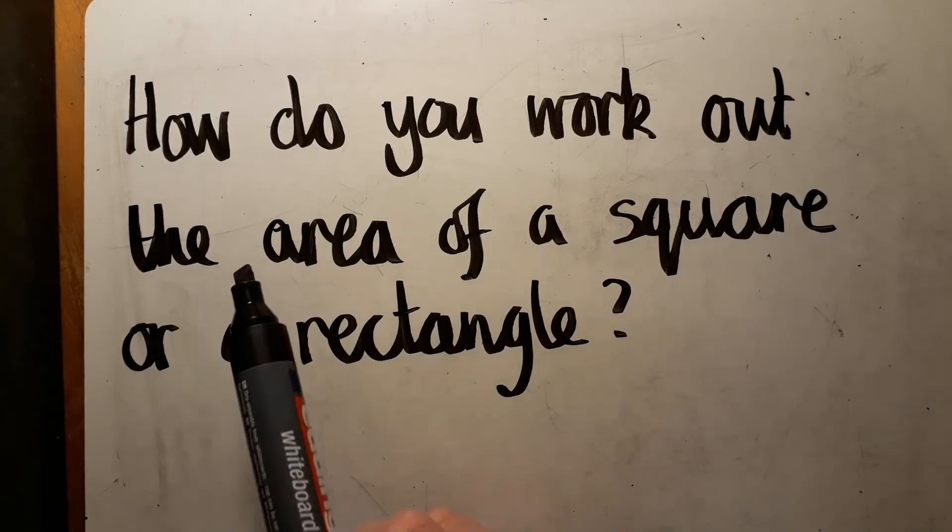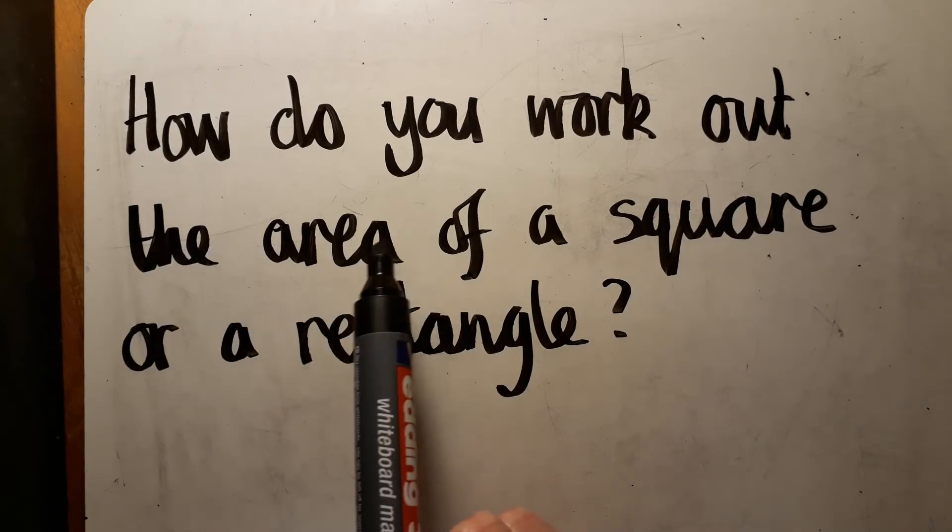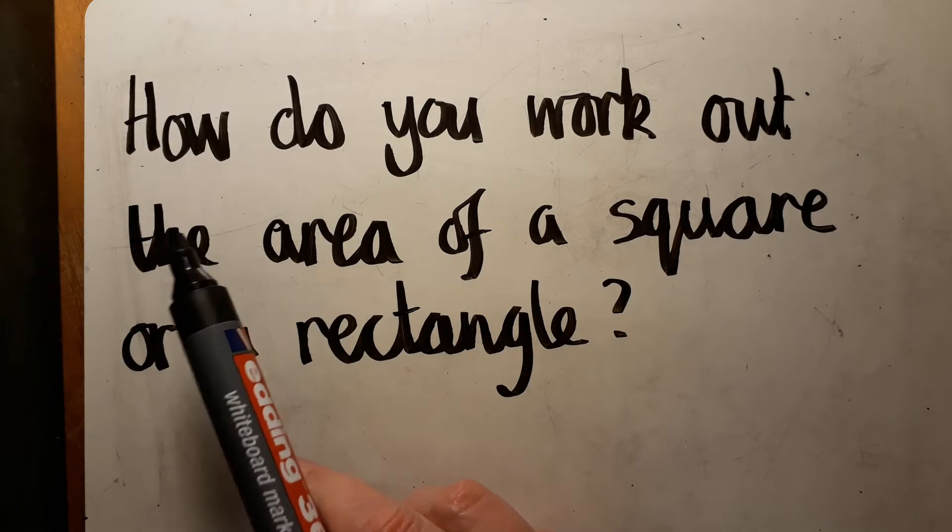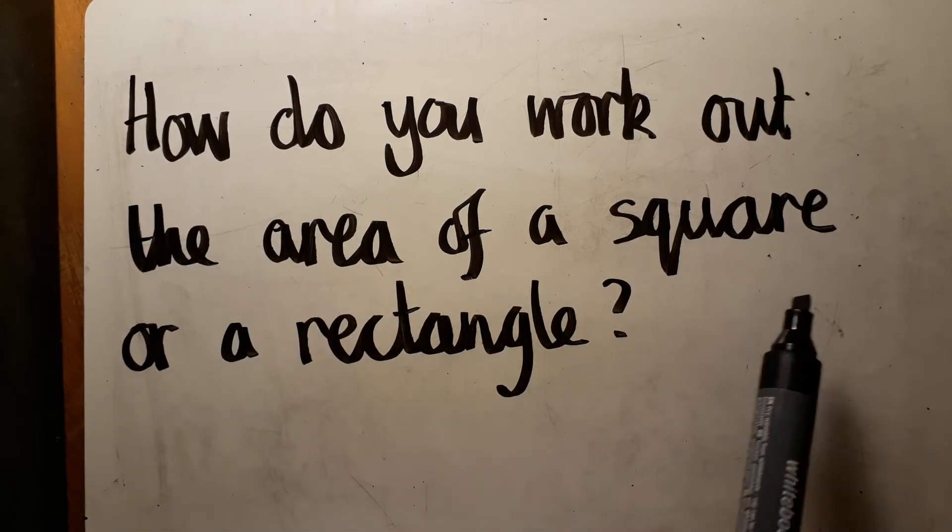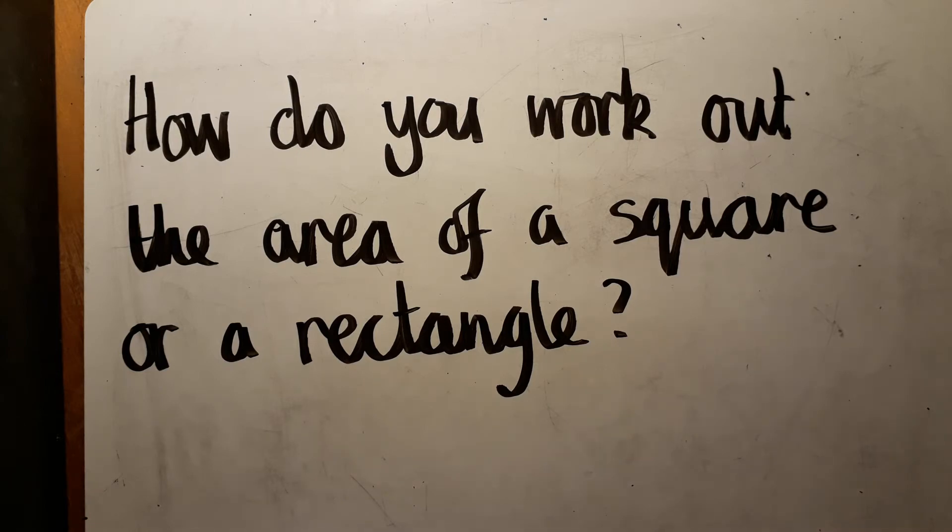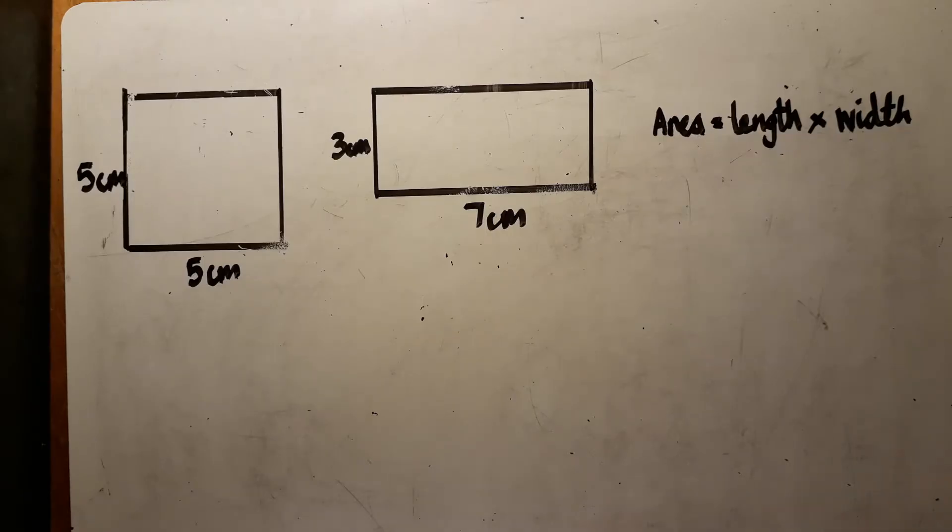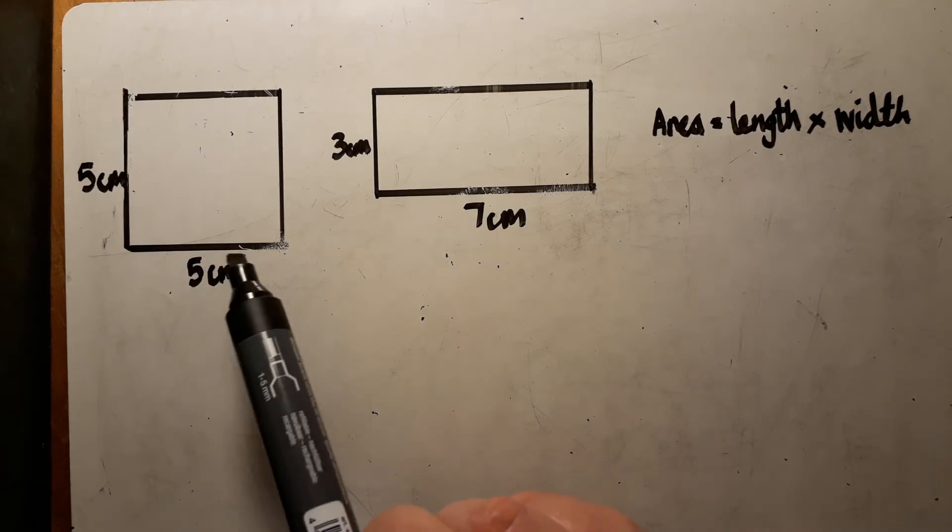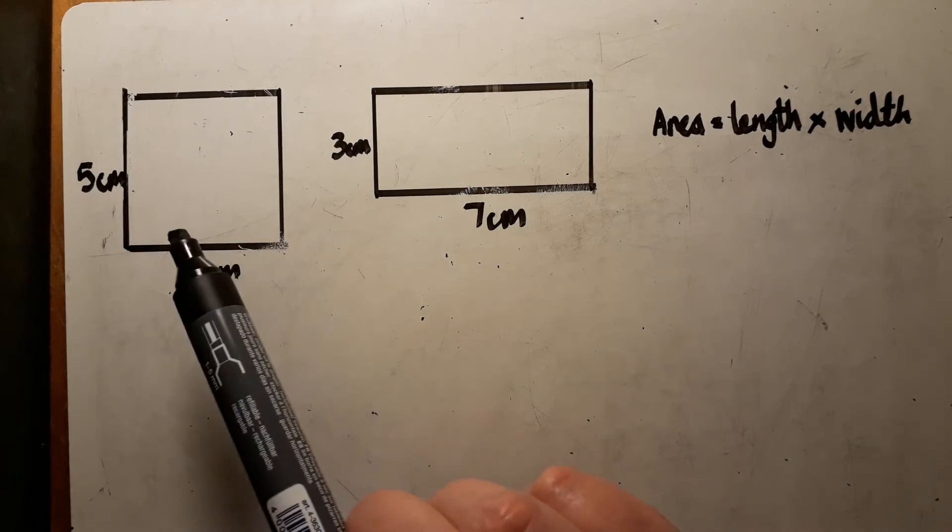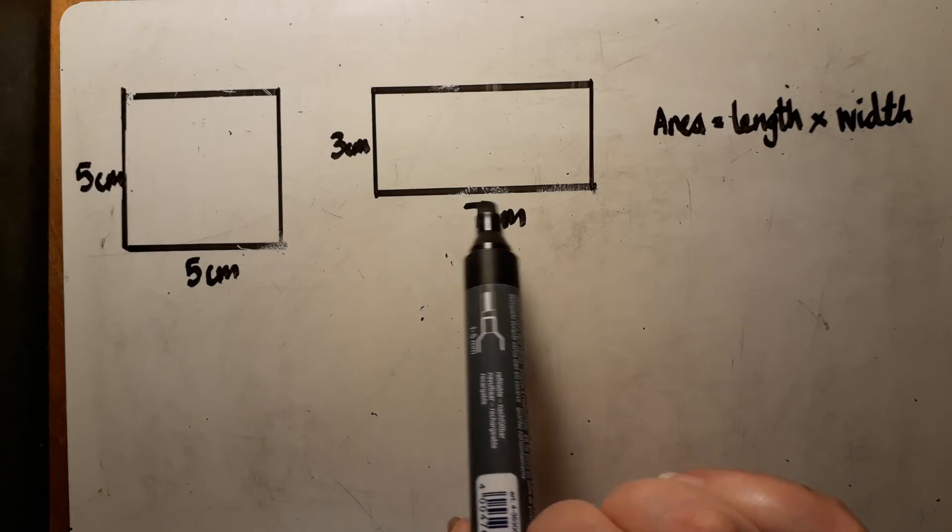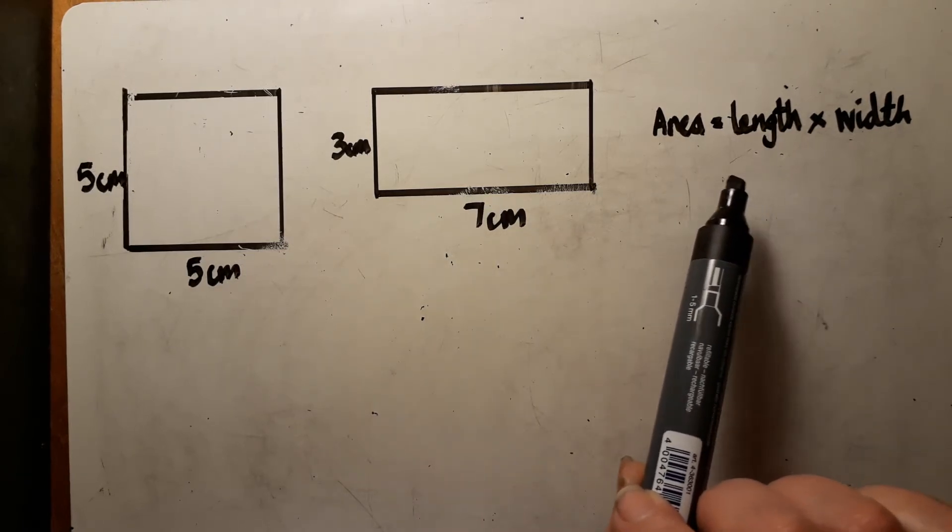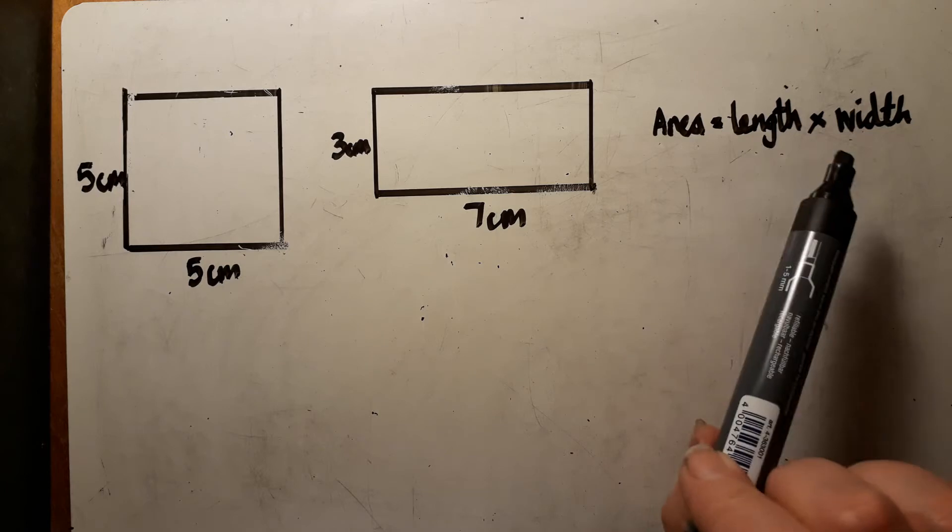And building on from our previous lessons this week, this question: how do you work out the area of a square or rectangle? To work out the area of a square or a rectangle, you can multiply the length by the width.